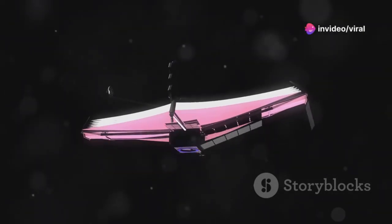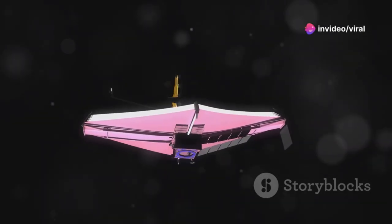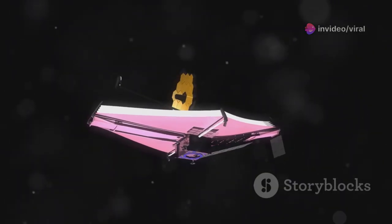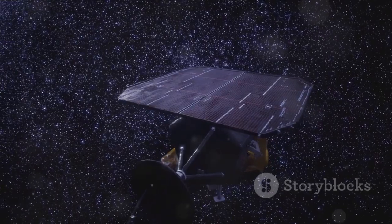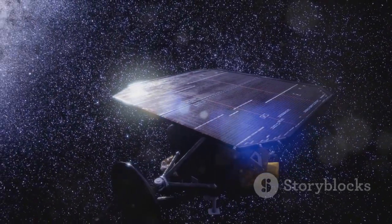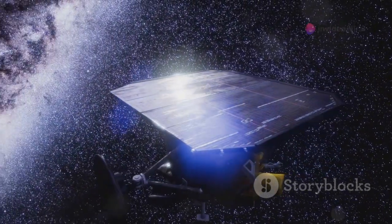Its intricate design, with 18 shimmering gold-coated mirror segments, was unlike anything ever attempted before. Its journey took it a million miles from Earth to a place called L2, a gravitationally stable point far beyond the moon.